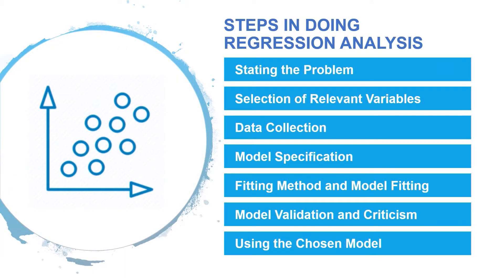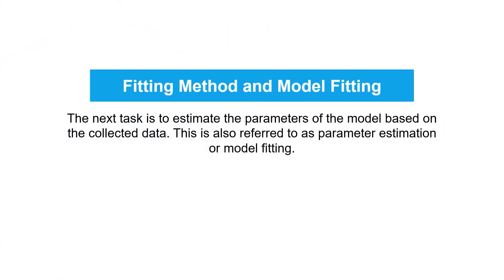The fifth step is method of fitting and model fitting. After the model has been defined and the data have been collected, the next task is to estimate the parameters of the model based on the collected data. This is also referred to as parameter estimation or model fitting. The most used method of estimation is called the least squares method. Under certain assumptions, the least squares method produces estimators with desirable properties. Other methods include the maximum likelihood method, the ridge method, and the principal components method. However, we will be using the least squares method.